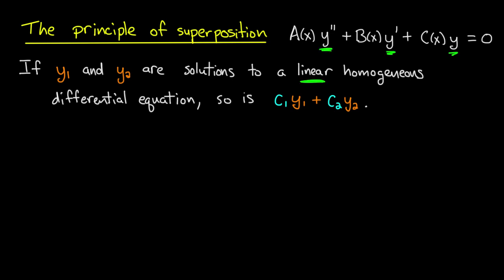Now remember it's linear because of the way that y appears in the equation. y and its derivatives appear by themselves, multiplied only by these arbitrary functions of the independent variable. And it's homogeneous because there's a 0 on the right-hand side. If I were to replace this 0 with anything non-zero, it would no longer be homogeneous.